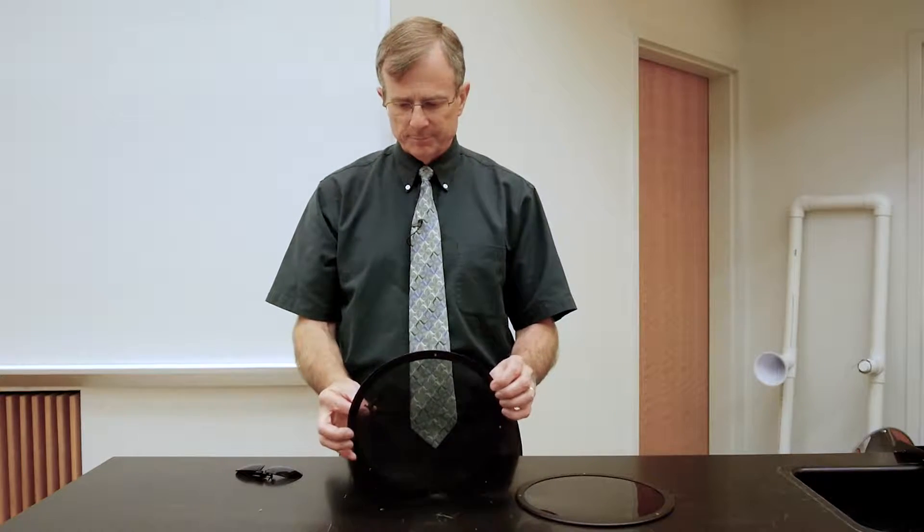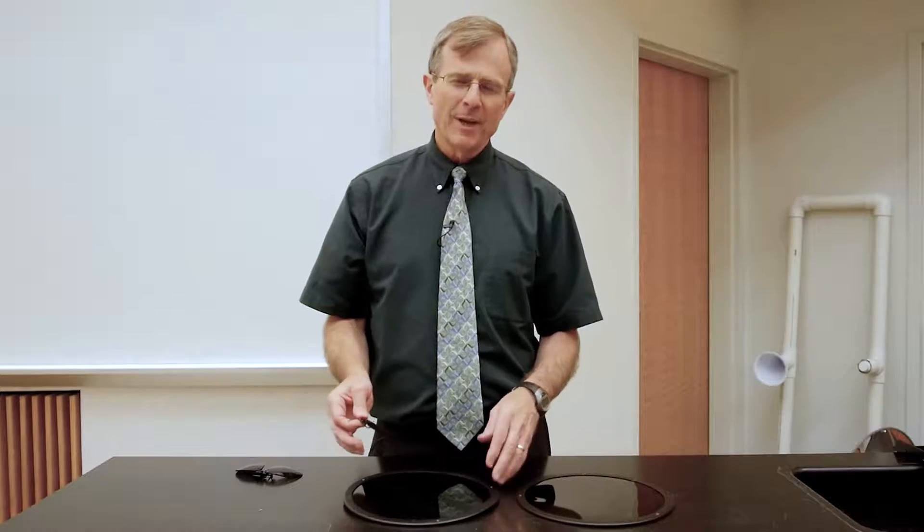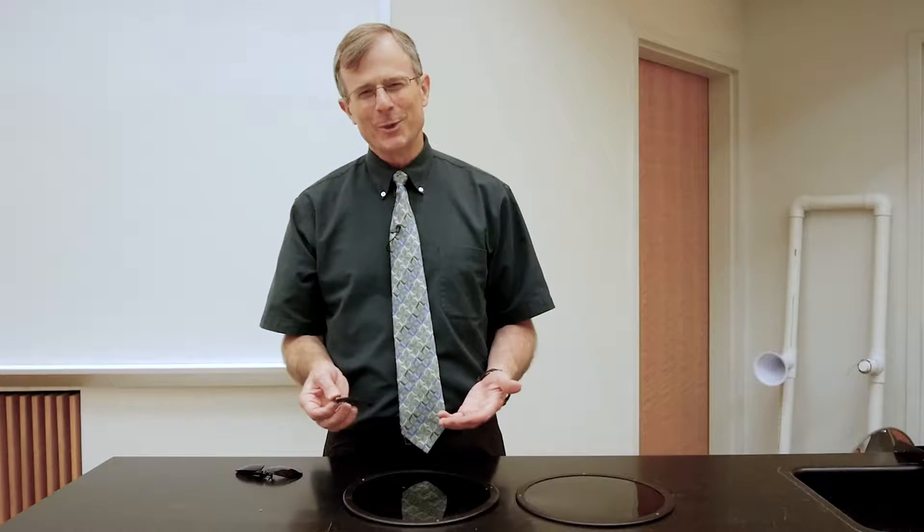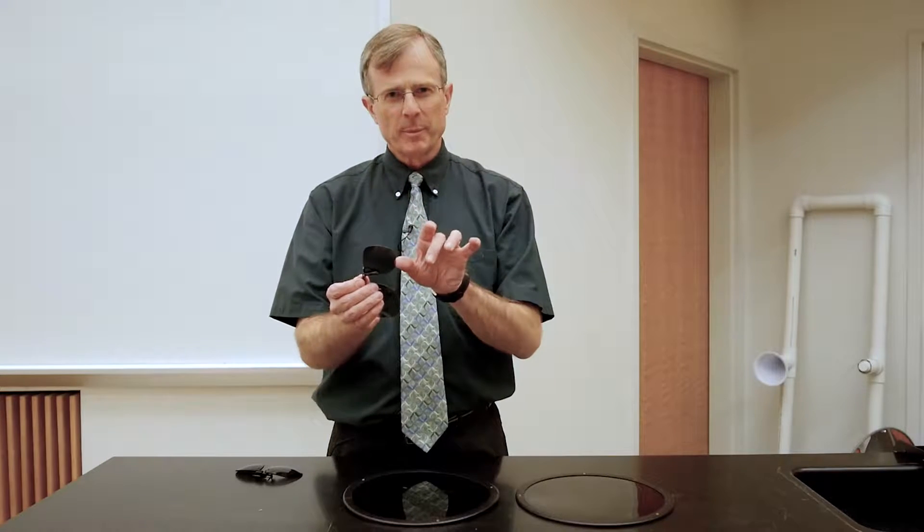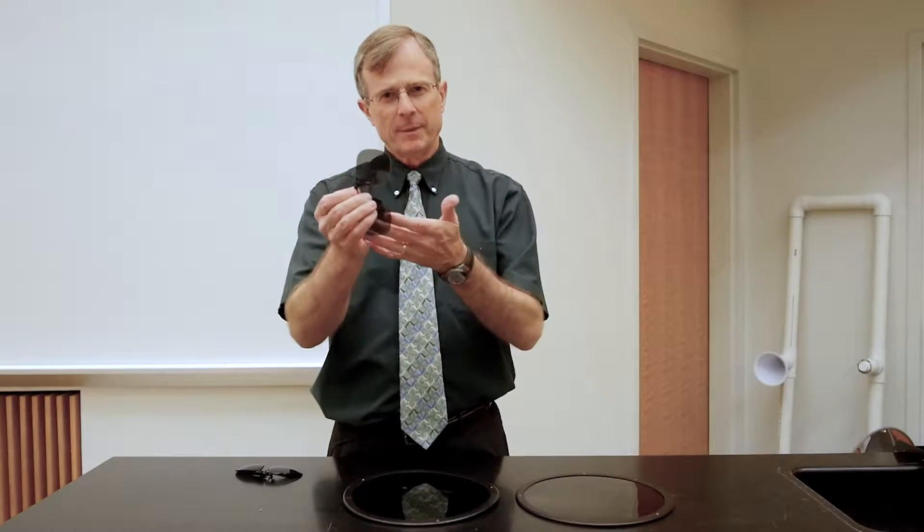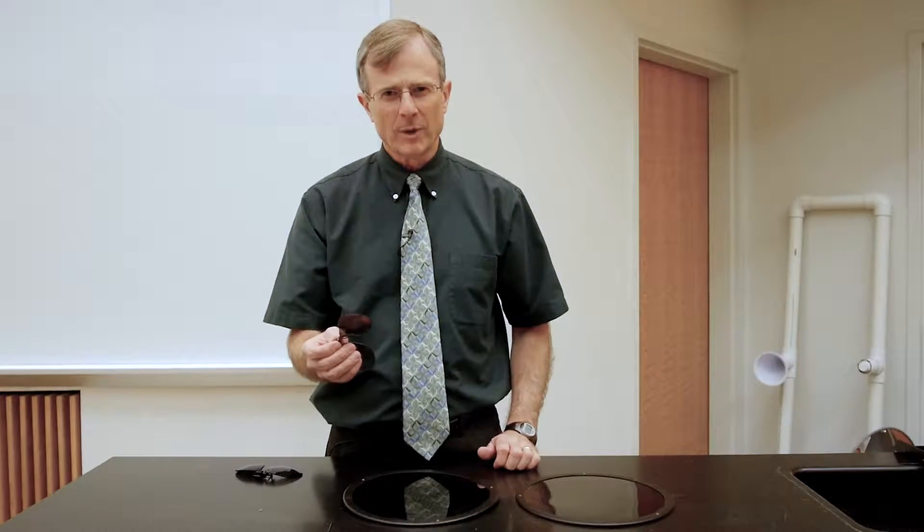You can find out if your lenses are polarized or not by taking one lens off and then turning it perpendicular to the other one. And if the image disappears, then you know they're polarized lenses.